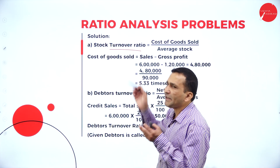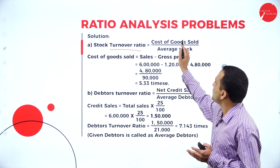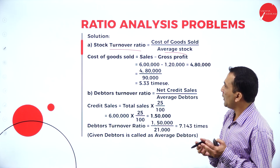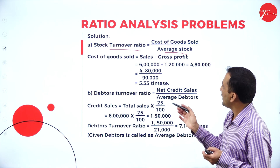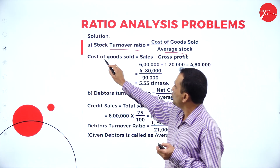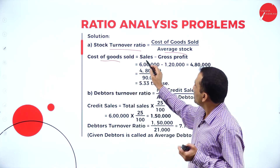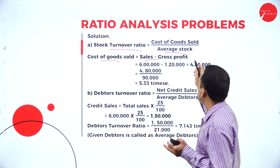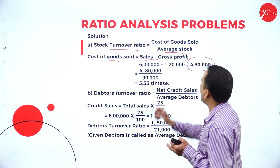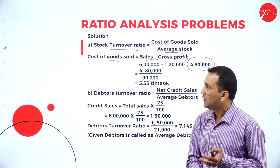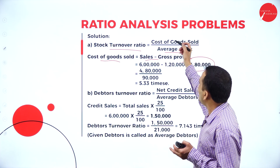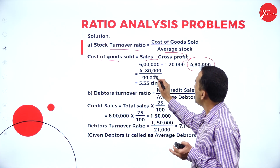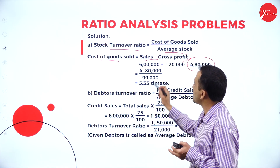Moving one by one: stock turnover ratio is very simple. The formula is cost of goods sold divided by average stock. Sales minus gross profit gives the cost of goods sold — that is 4,80,000.